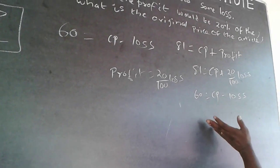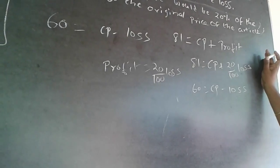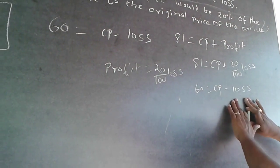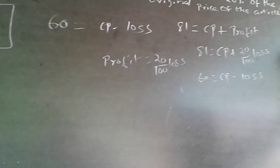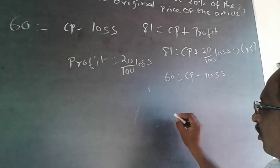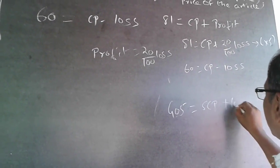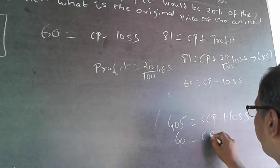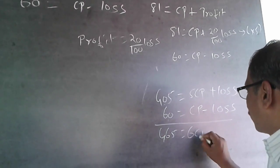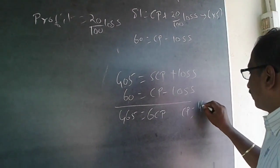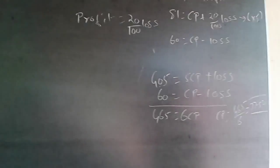I want to find cost price, so loss is an unwanted variable. Multiply the equation 81 = CP + (1/5) loss by 5: this gives 405 = 5CP + loss. The other equation is 60 = CP - loss. Adding both: 465 = 6CP, so CP = 465/6 = 77.50. The cost price is Rs 77.50.